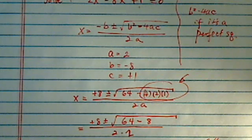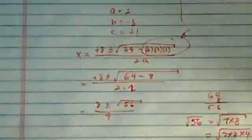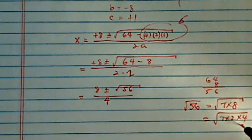Now radical 56 is equal to, I'm going to look for 7 times 8, okay, 7 times 2 times 4. The reason I put a 4 in here is that 4 is a perfect square.